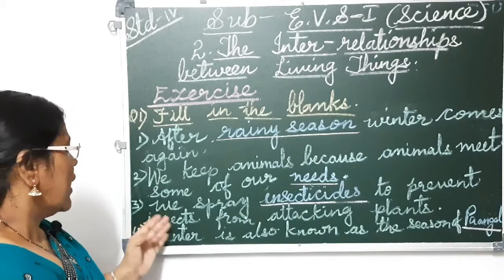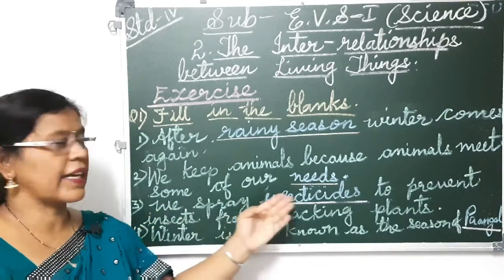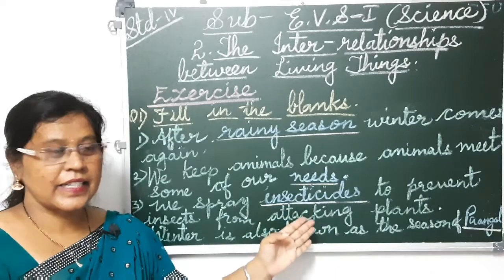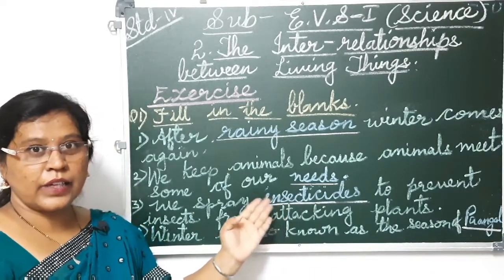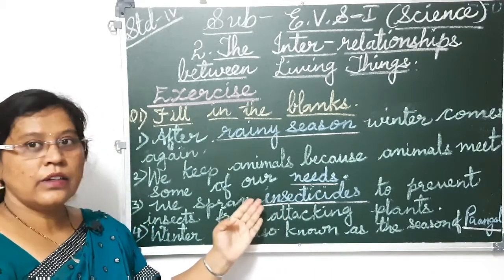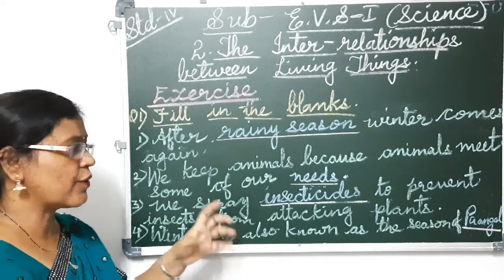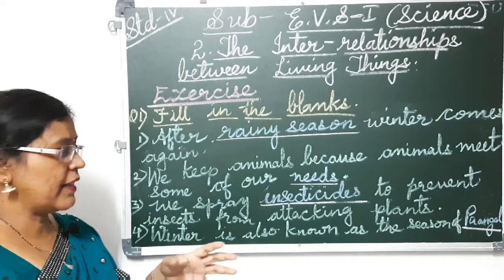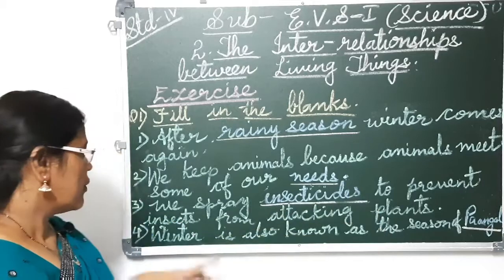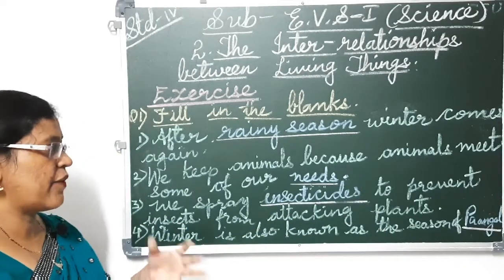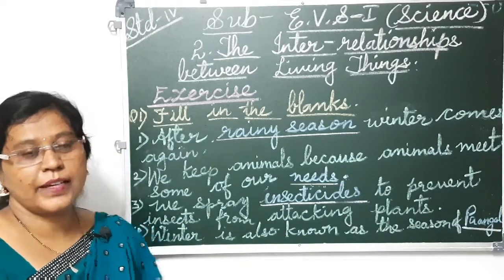The third one: we spray insecticides. Insecticides means pesticides. We spray insecticides to prevent insects from attacking plants.